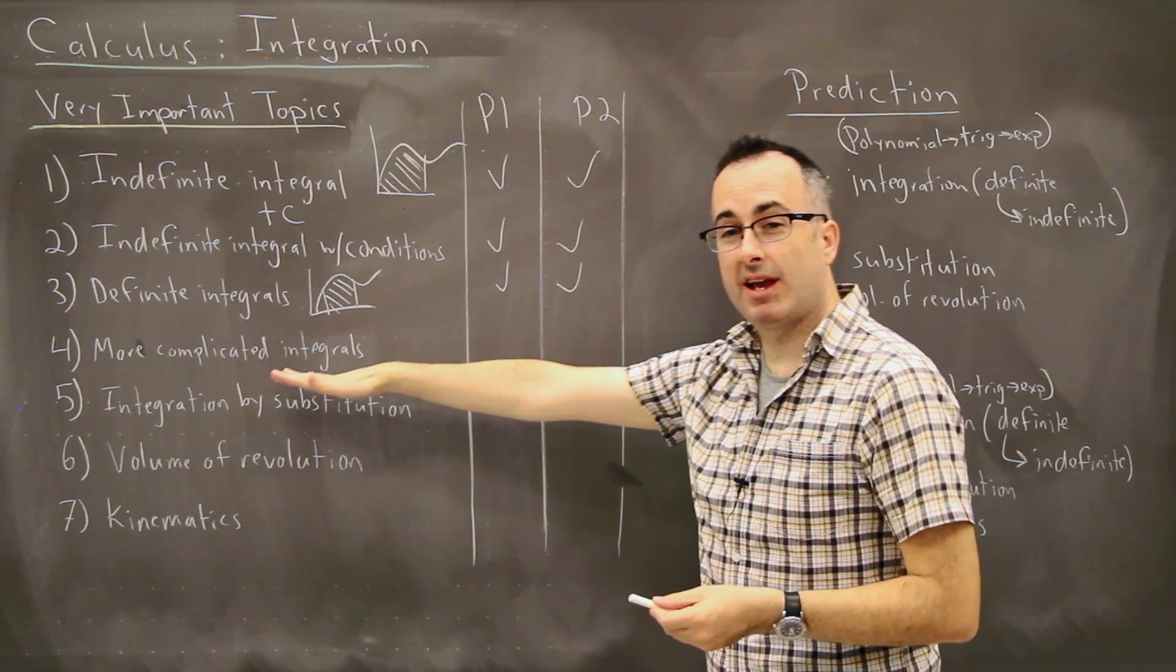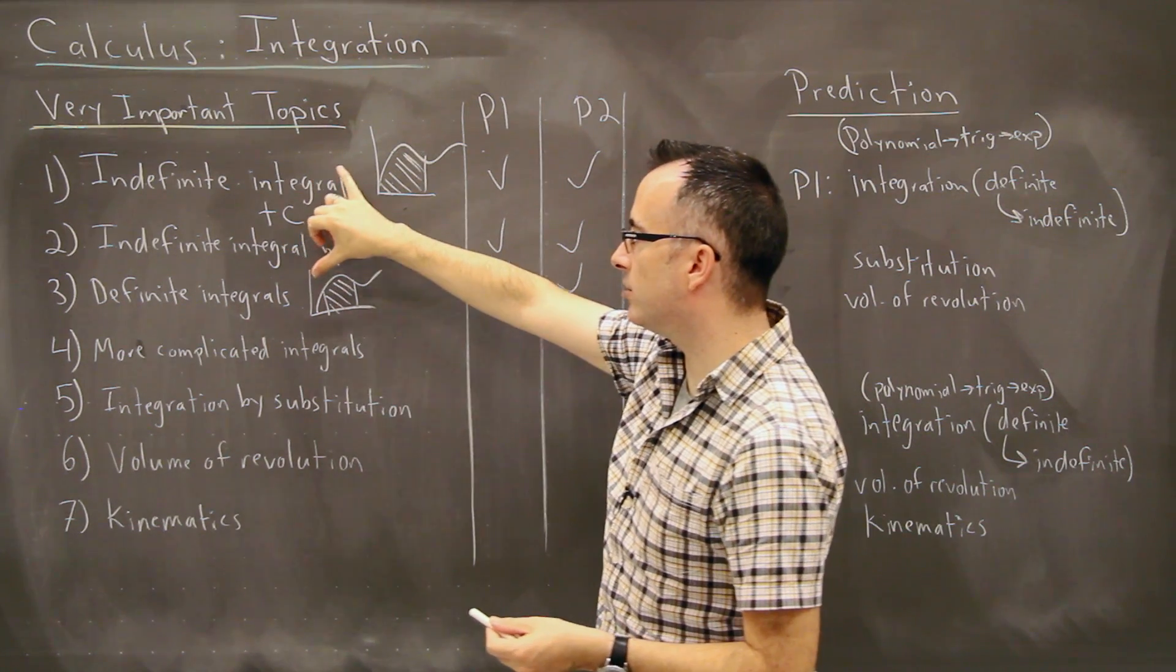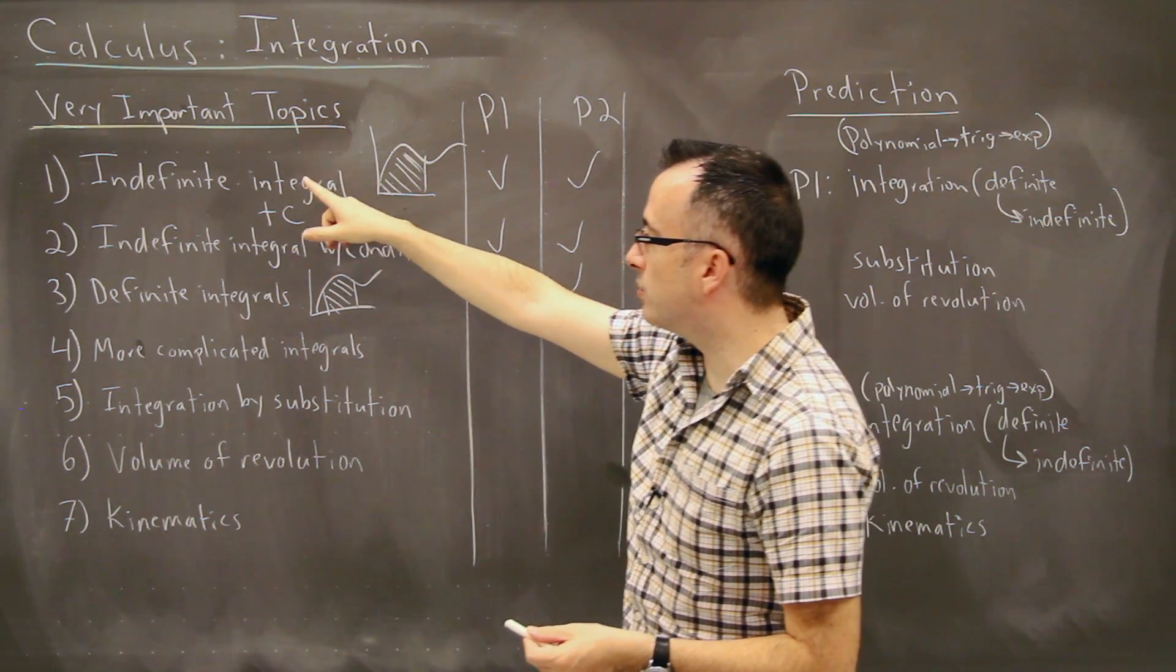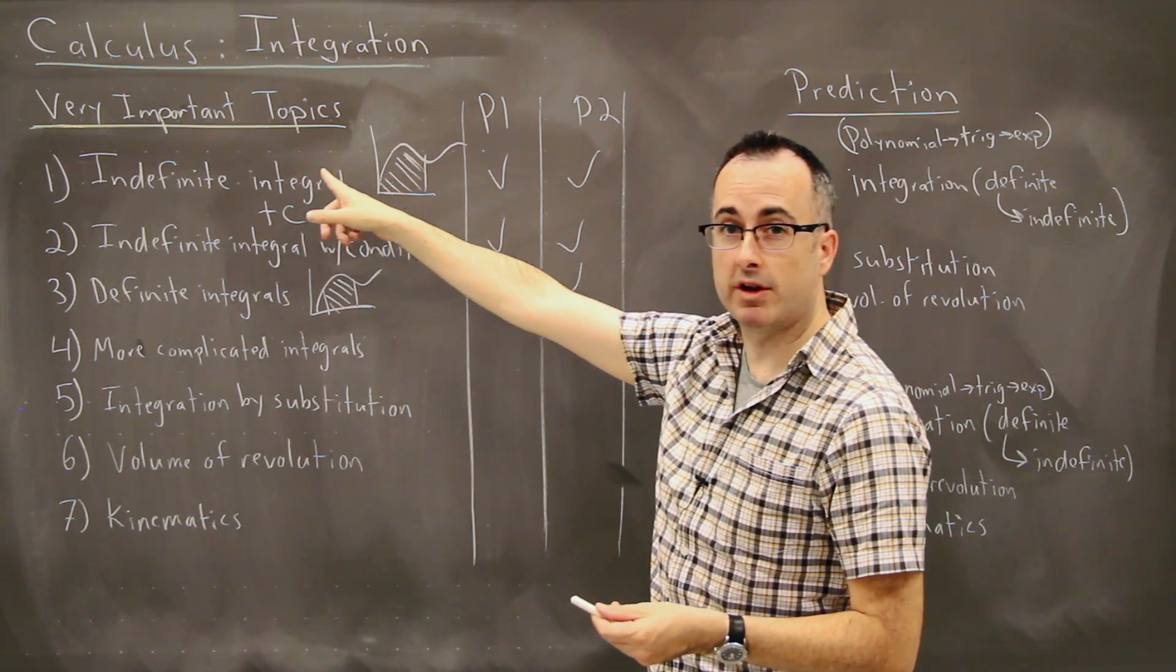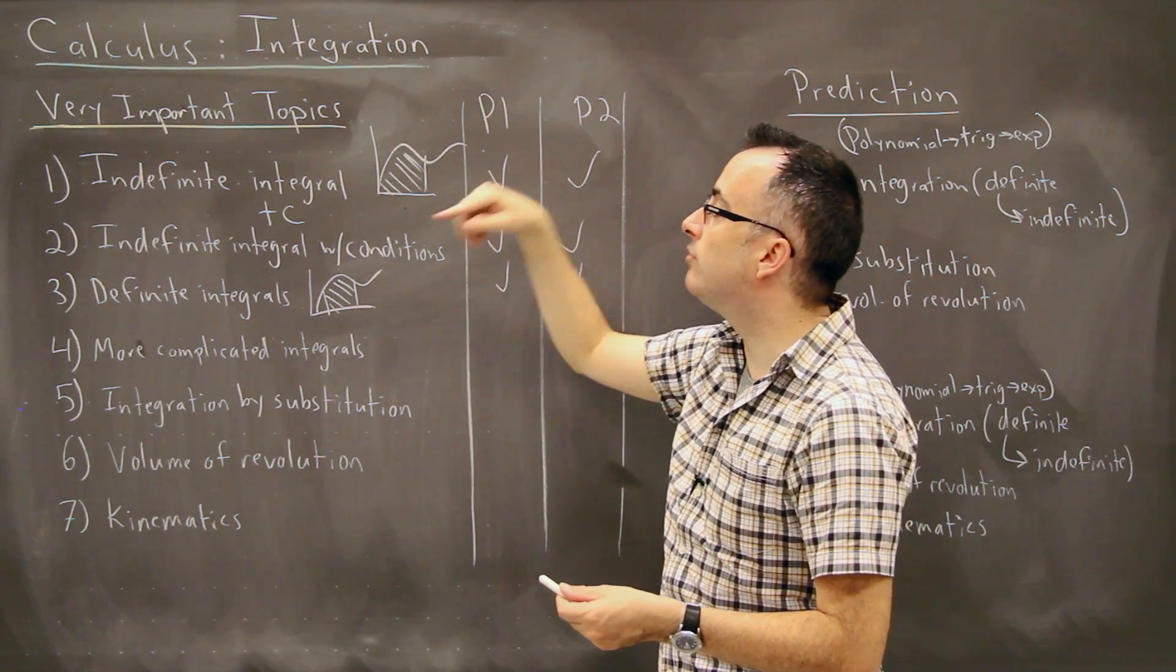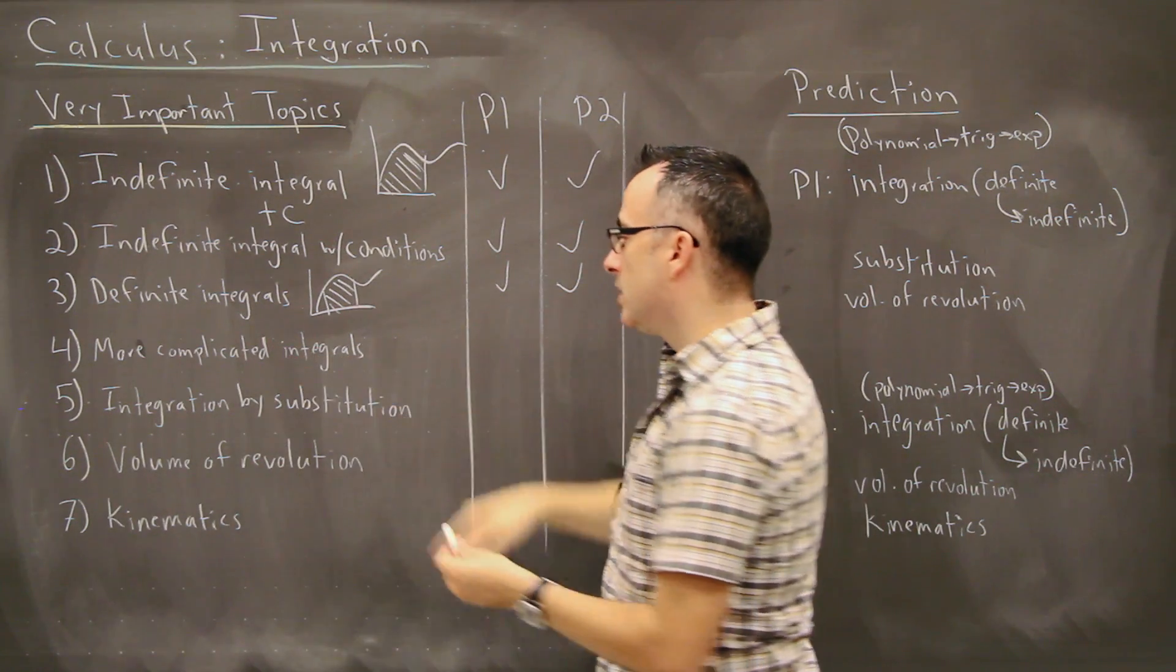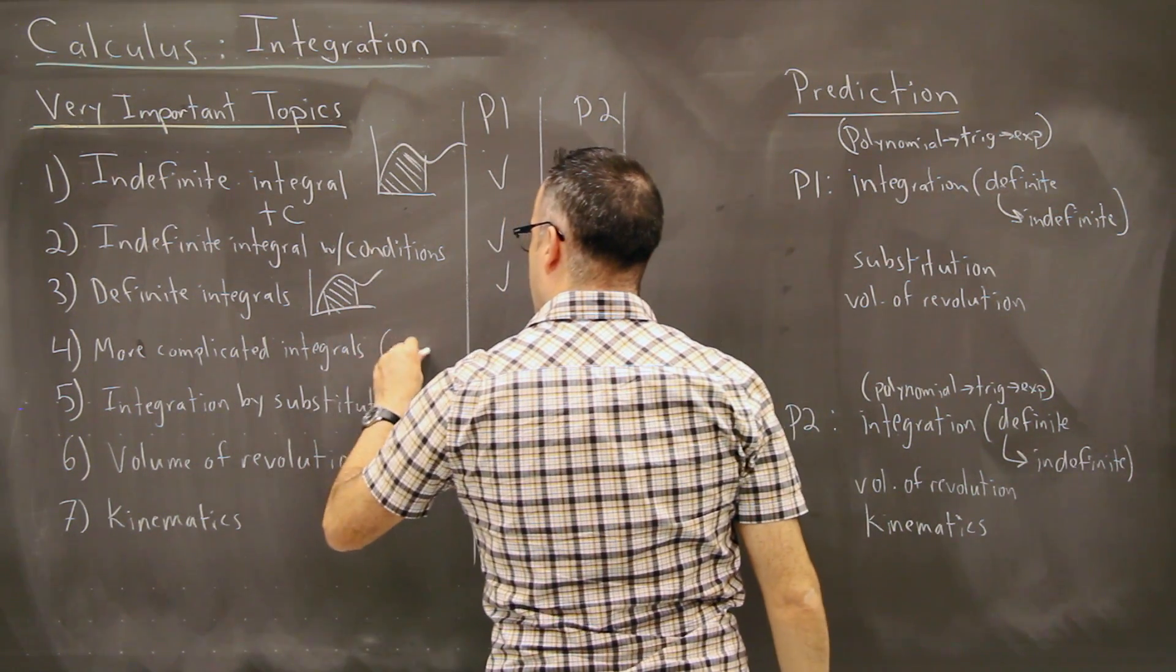Now we have more complicated integrals. This is because what we do here is within these indefinite integrals, we have some tricks. We're told some tricks about polynomials, so what to do for polynomials, what to do for trigonometric ones, what to do for exponential ones. And then what we do is for more complicated integrals, what we do is something of the form ax plus b.